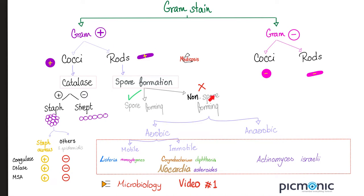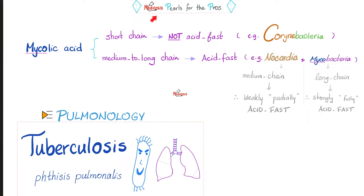Nocardia is non-spore-forming, aerobic, and immotile. There are some good rules in microbiology: if a bacterium has short-chain mycolic acid, it will be not acid-fast — case in point, Corynebacteria. But if the bacterium has medium-chain mycolic acid, like Nocardia, it will be weakly acid-fast. If, like mycobacteria, you have long-chain mycolic acid, you will be strongly and completely acid-fast.